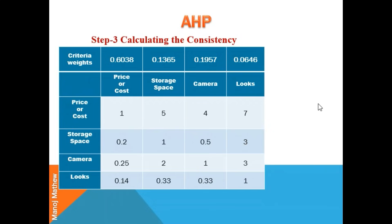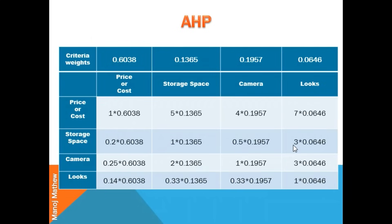The next step is calculating the consistency — that is, to check whether the calculated values are correct or not. For this, I have taken the same pairwise comparison matrix which is not normalized, and multiplied each value in the column with the corresponding criteria weight. You can see that 1 has been multiplied by the criteria weight 0.6038, and similarly 0.2 has been multiplied by the criteria weight 0.6038.